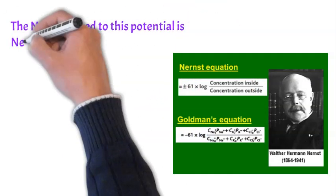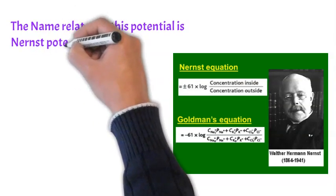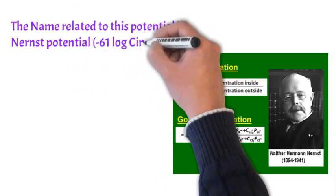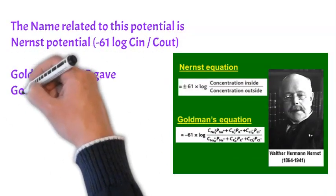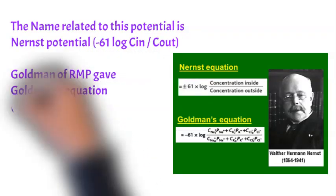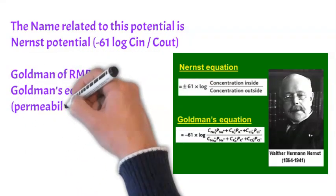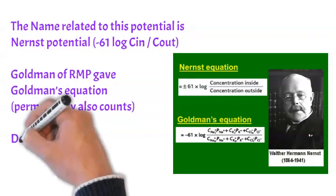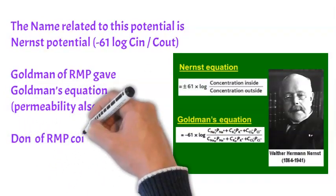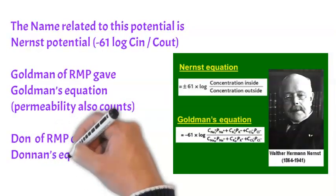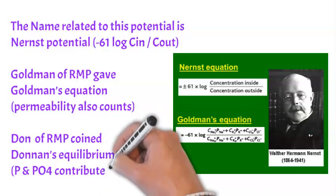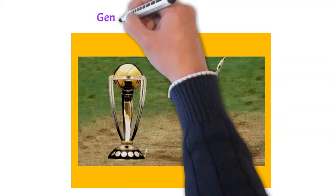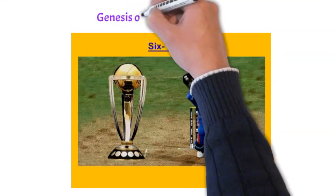We are having these names of scientists and mechanisms, so let's prepare them in an interesting way. We can say Nernst of RMP is Nernst potential, which is calculated by minus 61 millivolt log concentration inside upon concentration outside. Goldman of RMP gave Goldman's equation that says permeability also counts. Donnan of RMP is Donnan's equilibrium, which says that some negatively charged non-diffusible ions like protein and phosphate also contribute in RMP indirectly.